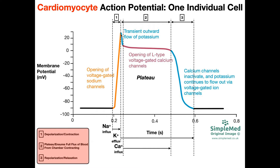At that point, sodium channels close and we have the opening of two channels: the voltage-gated potassium channels and the voltage-gated L-type calcium channels. Because the calcium channels are slow, you don't see them open initially. All you see initially is the potassium channels opening and potassium efflux.